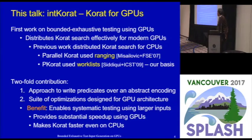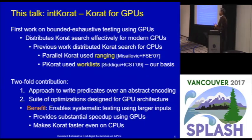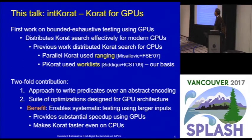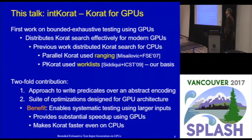First, we introduce an approach where the predicates are written on an abstract encoding, so that the RepOK, even though originally written to work on object graphs, is rewritten to work on integer arrays, making it more suitable for execution on the GPU architecture. We also introduce a suite of optimizations specifically designed for GPUs. As a result, we can create larger inputs and provide substantial speedups over the CPU baseline, as well as speedups in a sequential CPU setting.